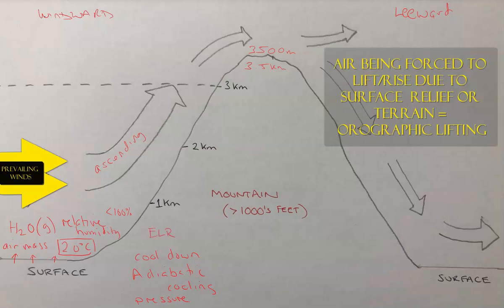The ELR is the average atmospheric temperature change with altitude — let's say 12 degrees Celsius per kilometer on average. However, this air mass follows the dry adiabatic lapse rate, or DALR, which means it has water vapor but is not yet saturated. The DALR rises at 10 degrees per kilometer, so it stays warmer. In this case, the ELR is greater than the DALR, creating an unstable atmosphere that promotes lifting over this orographic situation.